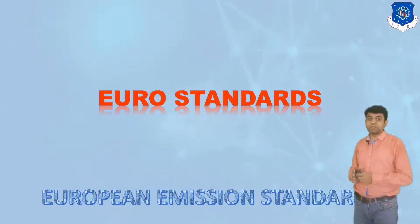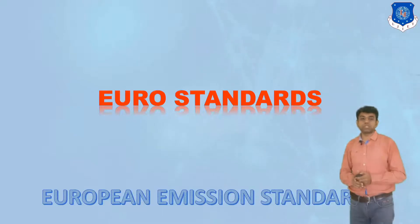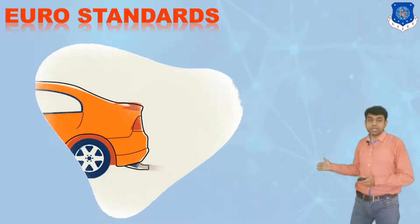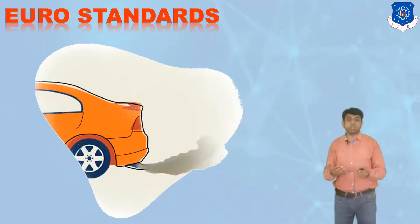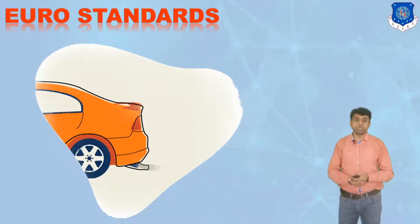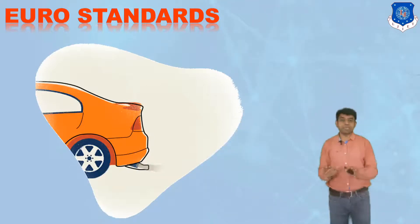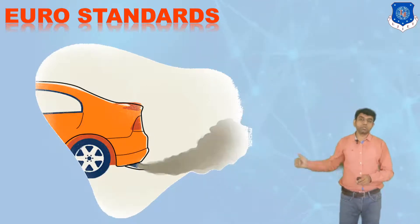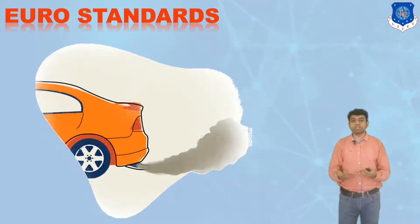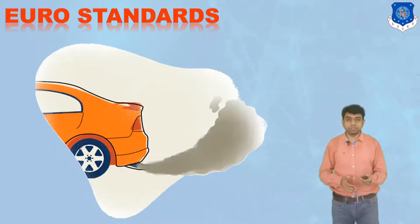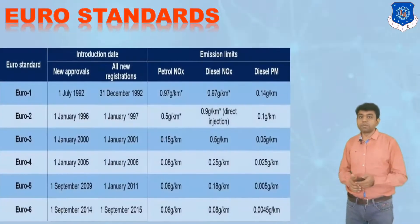Now let us understand the Euro standards, which stands for the European Emission Standards. They have given the norms for evaluating how much exhaust gas is actually allowed to be liberated into the atmosphere. This is given by the European Union and followed in Europe itself. In India, we follow the BS norms, that is the Bharat Stage norms. These European standards have given specifications for the values of carbon monoxide, carbon dioxide, COX emissions, as well as NOX emissions. Let us have a quick outlook of these particular standards.